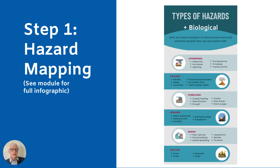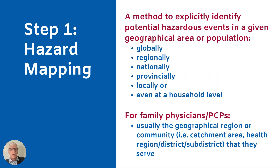The first step you're going to take is hazard mapping. For those with access to the FM Pivot module, an infographic is embedded on the page containing this video, which goes through the kinds of hazards you might consider for your community. I would like to add that there is an additional hazard not listed on this infographic, and that is biological hazards — the classic example we are encountering right now being the pandemic of COVID-19.